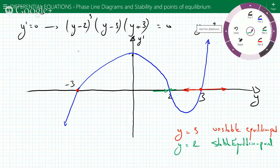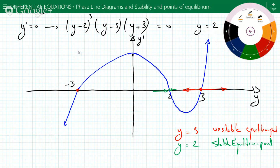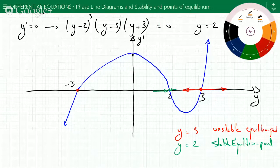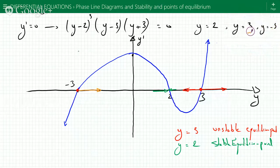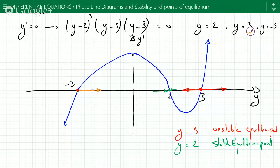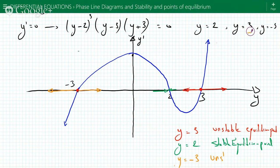Now let's go to y equals negative 3. If y is greater than negative 3, the slope is positive so y is increasing — you're going away from it. If y is less than negative 3, the slope is negative, which means it's becoming less negative, so you're going away from it. So y equals minus 3 is an unstable equilibrium point.